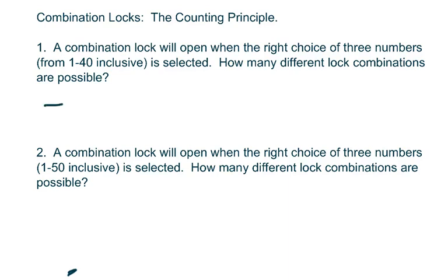It means we can repeat them. There's 40 ways to choose the first, 40 ways to choose the second, and 40 ways to choose the third. That's 40 cubed, which equals 64,000.